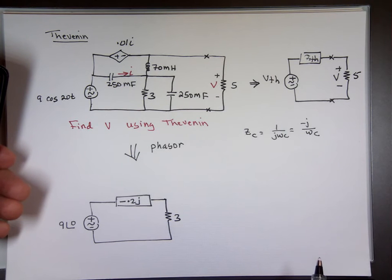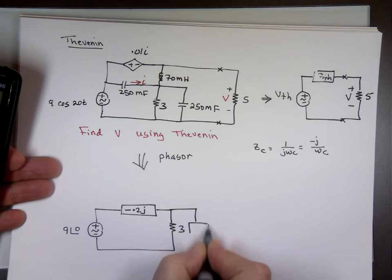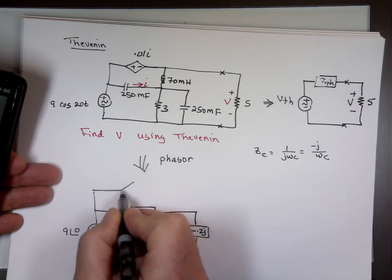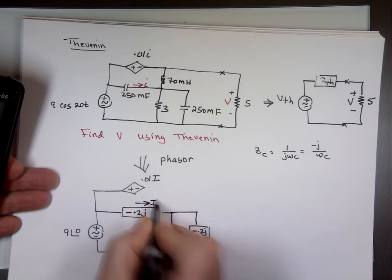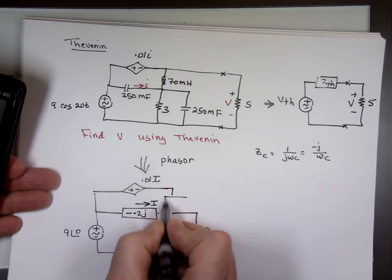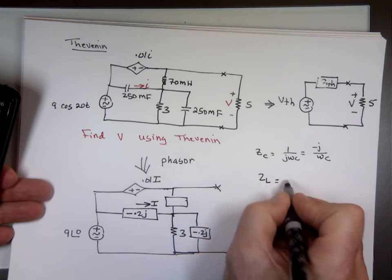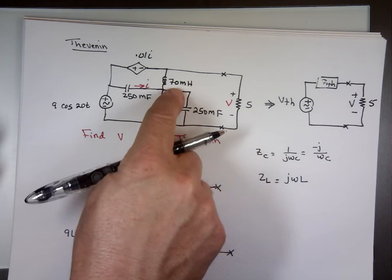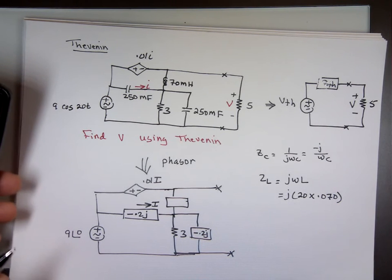That is the impedance of the capacitor. Both capacitors have the same value: −0.2j. The dependent source value is 0.01 times I, where I is the current going through that branch. For the inductor, the impedance is jωL. With ω = 20 and L = 70 millihenries: 20 × 0.07 = 1.4j.